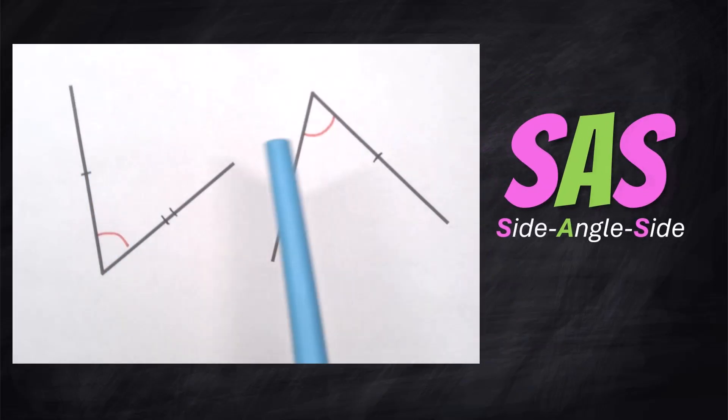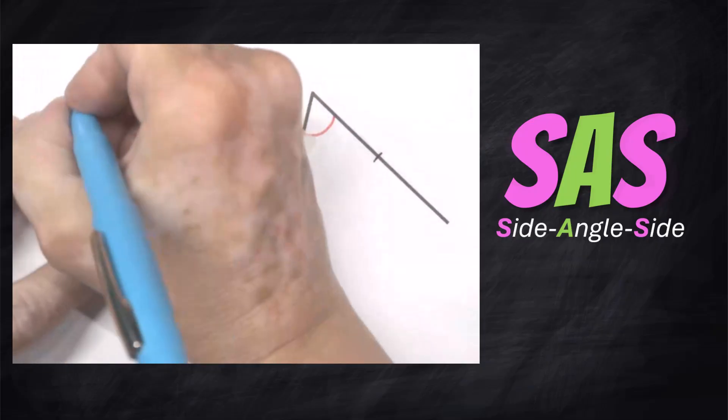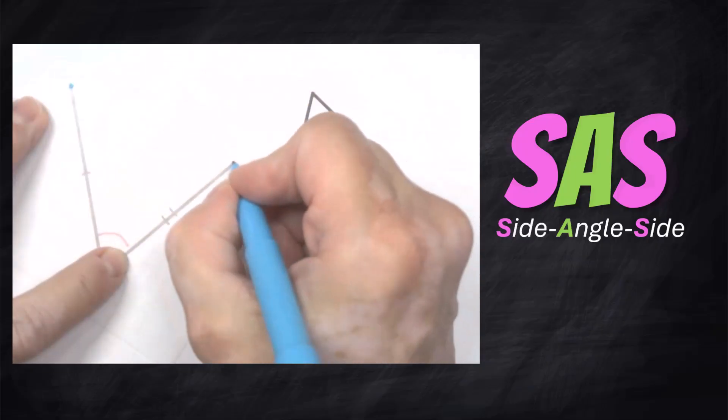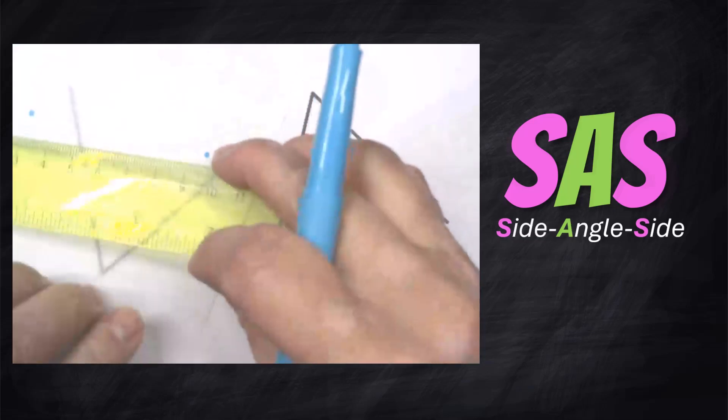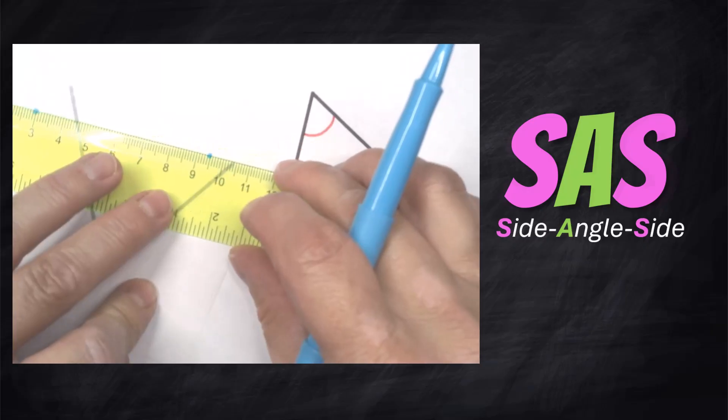This side is congruent to that side and this side is congruent to that side. So if we drew the third side and we'd have two triangles, would we have congruent triangles? I know it seems pretty obvious but we have to check these things. What we're going to do is check if this combination of side angle side forces the third side to be the same so you don't even have to check it.